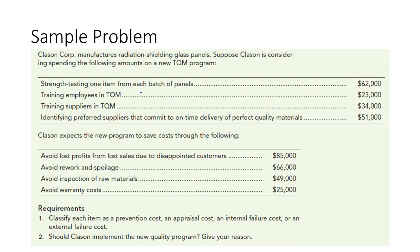Strength testing one item from each batch of panels would cost $62,000. Training employees in TQM, or total quality management, $23,000. Training suppliers in TQM, $34,000. Identifying preferred suppliers that commit to on-time delivery of perfect quality materials, $51,000. Clayson then expects the new program to save costs through the following.